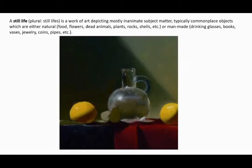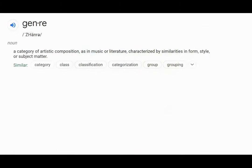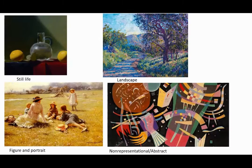A still life painting is basically a painting of one or more objects. Still life is one of the important genres or categories of Western painting, the others being landscape, figure and portrait paintings, and non-representational or abstract paintings. There are also paintings that combine two or more of these categories, like the figure painting that has a landscape setting.